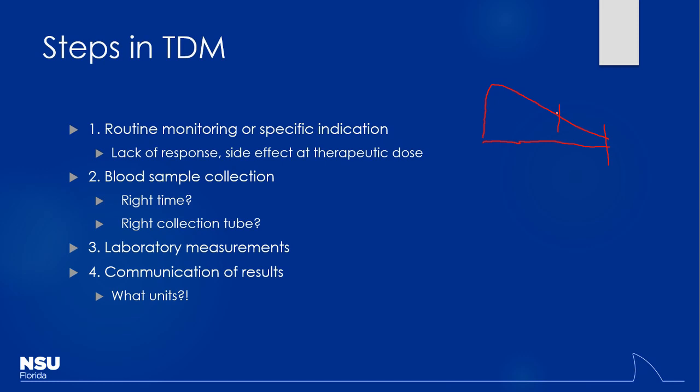Assuming the nurse documented the time appropriately — since they're generally the ones getting most of your labs — you'll be able to tell if the draw was too early or not. In conjunction with knowing what time the lab was drawn, you also need to know when the dose was actually given, so you can correlate it to whenever that trough was done — was this an 8-hour level, a 12-hour level?